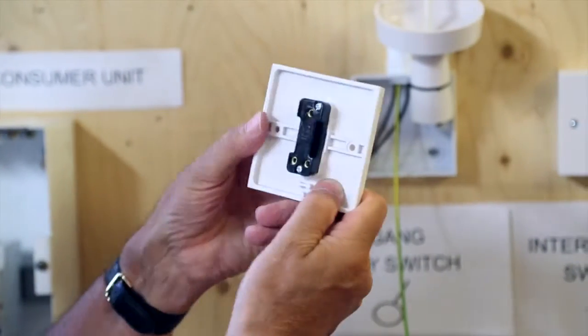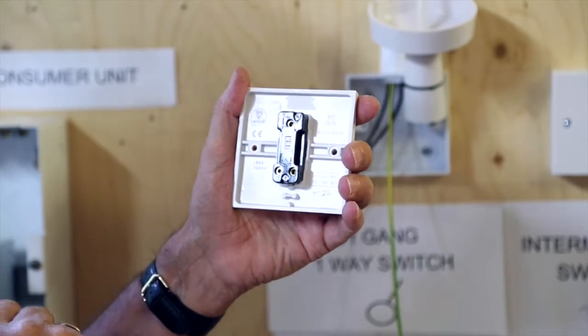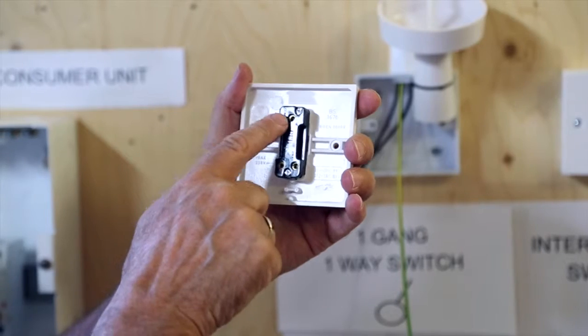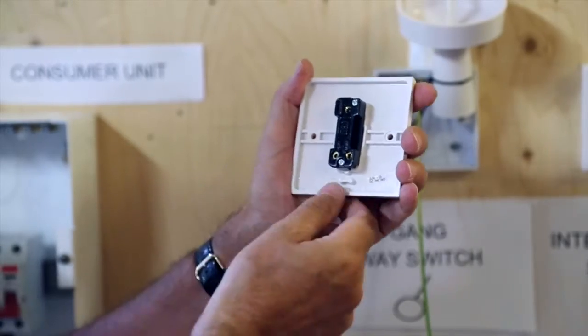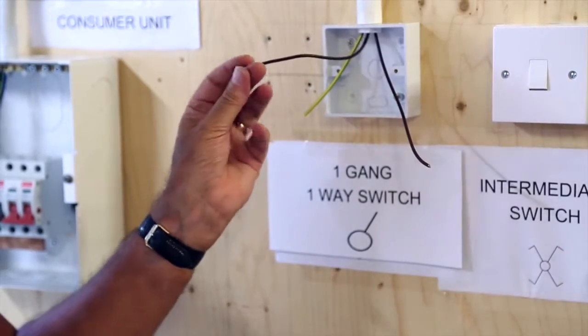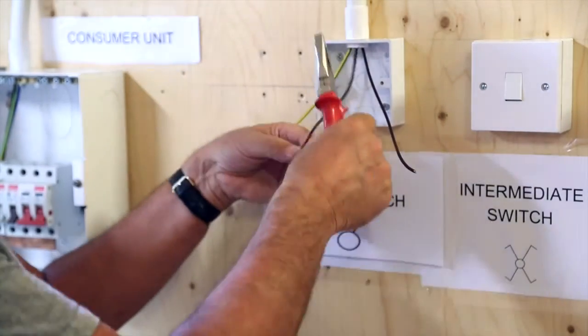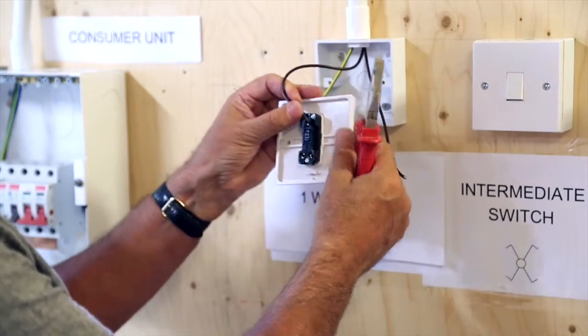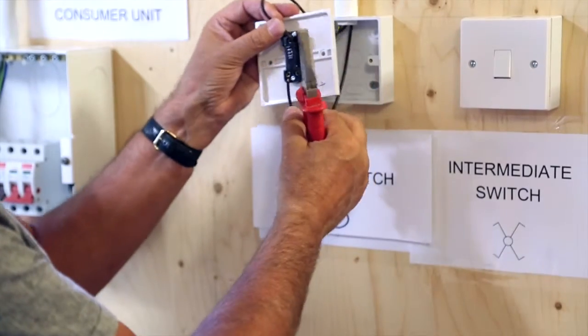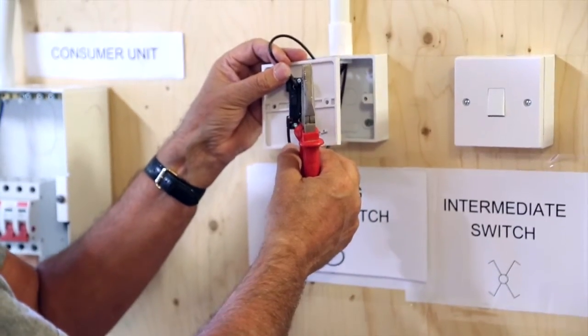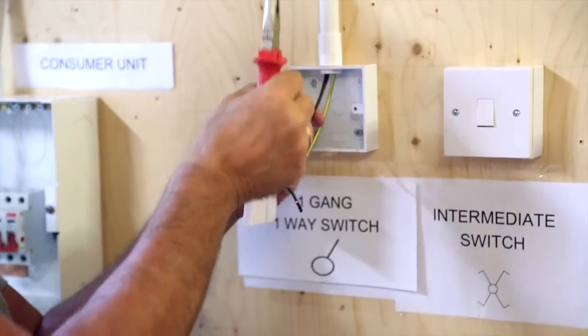The switch we use has the availability of one-way and two-way. For the one-way we'll be using the common and the bottom left hand termination here which is identified as one-way. This cable which I bent over is our feed from the consumer unit which will go into the common of the switch. And I will then proceed to connect the return to the ceiling rose into the one-way element of the switch. When cutting these cables don't cut them too short in case you need to get the face plate off. So give yourself a little bit of room for the cables itself.